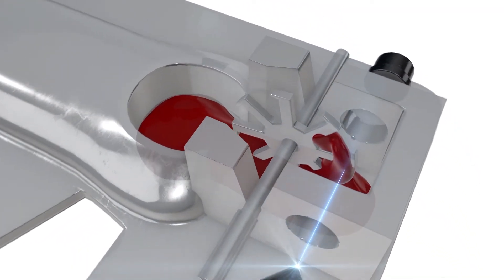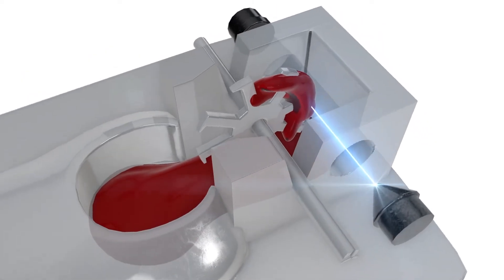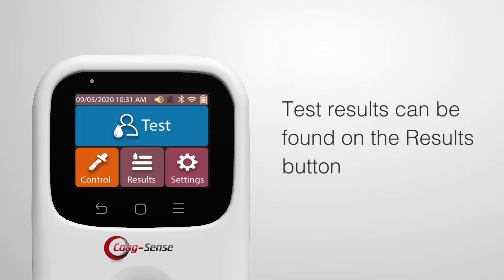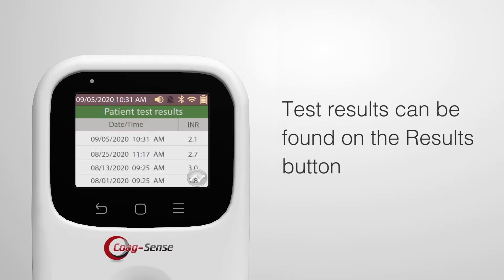Providing superior accuracy, this meter measures clot formation directly. No lookup tables, no algorithms. The actual time required to perform a test is the actual prothrombin time. Reliable test results are available in less than one minute.